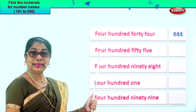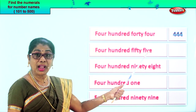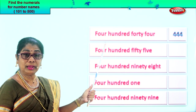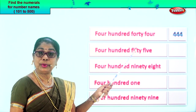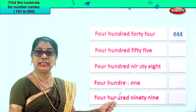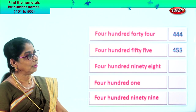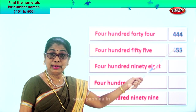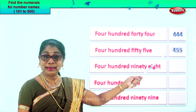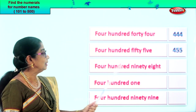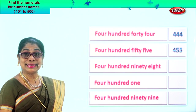Look at this, next one. Four hundred fifty-five. Four in the hundreds place. Fifty — five in the tens place, five in the ones place. So you have four, five, five. Four hundred fifty-five. Look at the numeral: four hundred fifty-five. Are you enjoying it? Good.